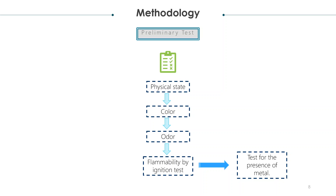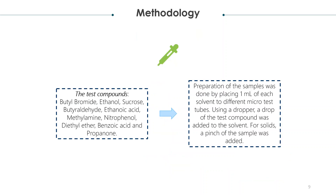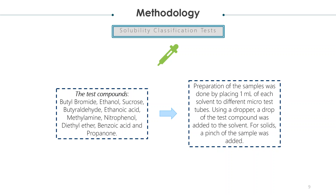There were several factors that were considered: the flammability and nature of the flame; if the compound is solid, note whether it melts and how it melts; and the odor of the vapor or gases evolved, if any. Solubility tests were done to identify the classification of the organic compounds provided.